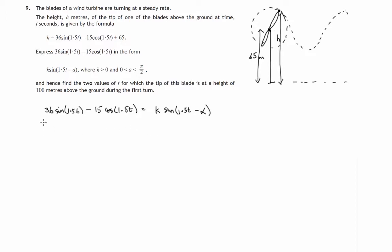Let's look carefully at the right-hand side of this equation. The sine of the difference of two angles can be expanded. We have a formula that says k sine 1.5t cos alpha minus k cos 1.5t sine alpha. Everything gets multiplied by a k term.